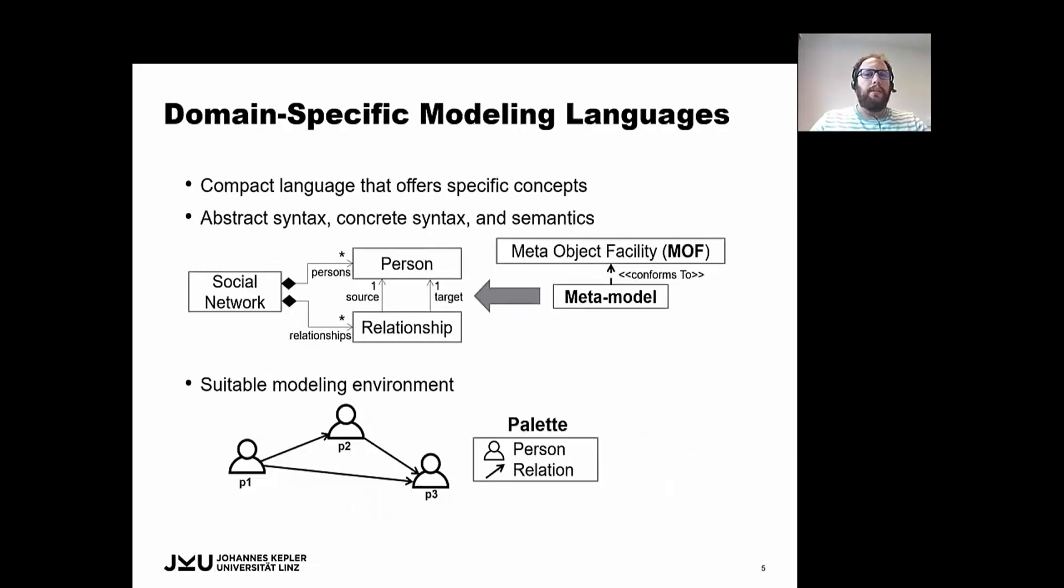Then, how can we implement a DSML? DSMLs are compact languages that offer high-level primitives that usually correspond with the specific concepts of the domain. To create a DSML, developers must create an abstract syntax, concrete syntax and semantics.